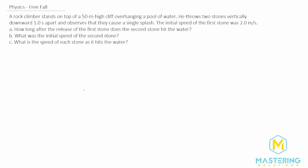Welcome to Mastering Solutions. In this free fall problem, they tell us that a rock climber stands on top of a 50 meter high cliff overhanging a pool of water. He throws two stones vertically downward one second apart and observes that they cause a single splash. The initial speed of the first stone was 2 meters per second.